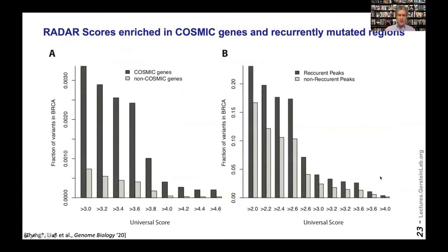We find that our procedure gives higher scores to COSMIC genes — known cancer genes — than to others. It also gives higher scores to recurrently mutated regions in, for instance, breast cancer, which gives us confidence that the score is useful in a cancer context.